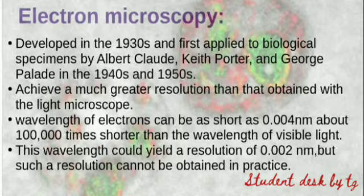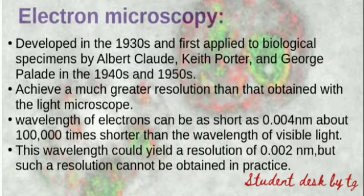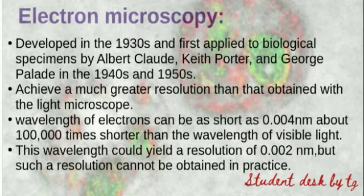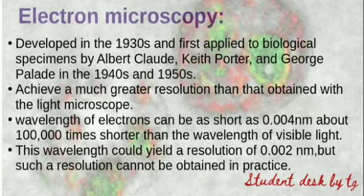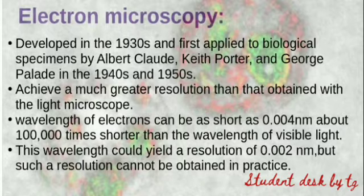Electron microscopy gives much greater resolution compared to light microscopy. Light microscopy is normally used in college and school labs, but in research labs we mostly use electron microscopy. It can achieve a wavelength of 0.04 nanometers for electrons, which is 1 lakh times shorter than the wavelength of visible light. When the wavelength is small, the resolution is higher.